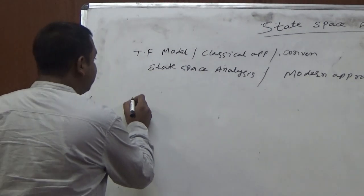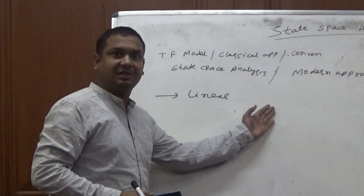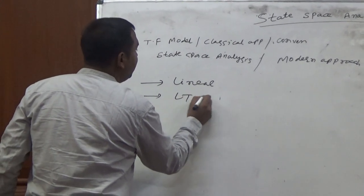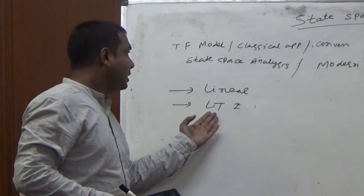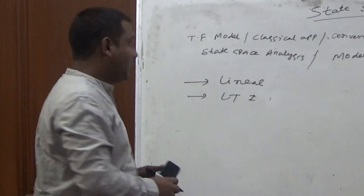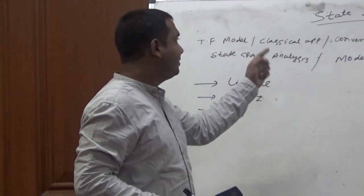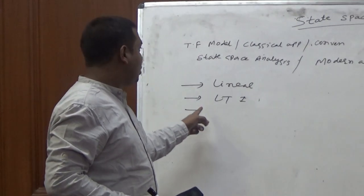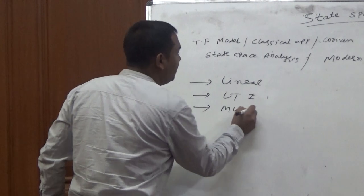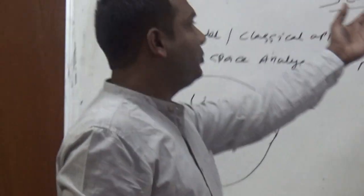In the transfer function model, we can only model systems which are linear — meaning they have no initial energy, so initial conditions are zero. A second condition is that they must be linear time-invariant (LTI) systems. In the transfer function approach we cannot design a system which is non-LTI. Another disadvantage of the transfer function or classical approach is that it cannot consider initial values, and it cannot design multi-input multi-output systems. Because of these limitations, we move into state-space analysis.